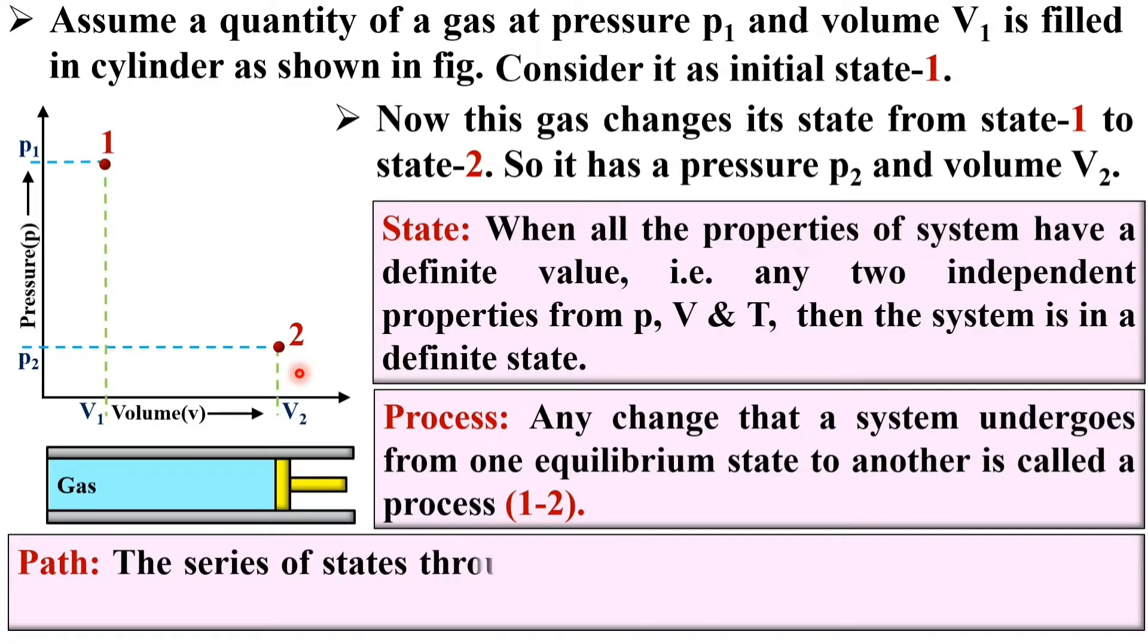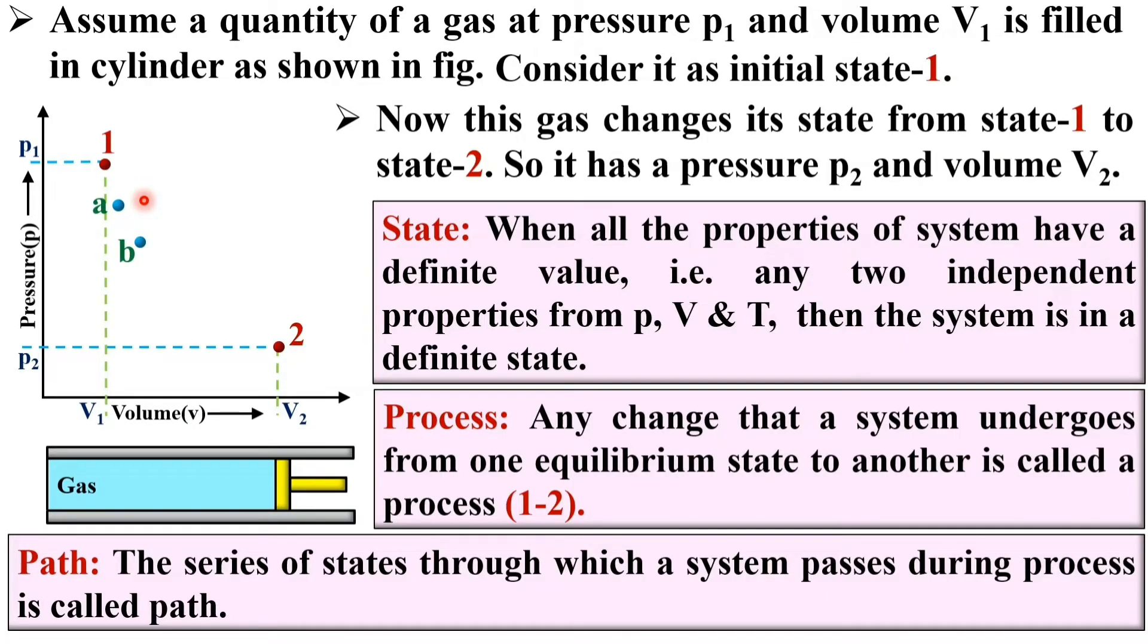Now, the next definition: path. The series of states through which a system passes during the process is called path. Let me draw the intermediate series of states. Here you can see the intermediate series of the states A, B, C, D, E.